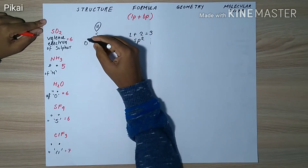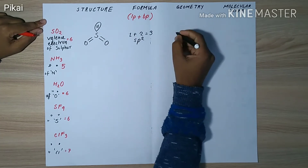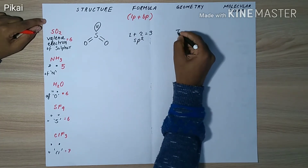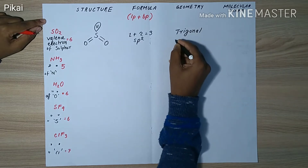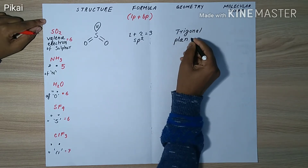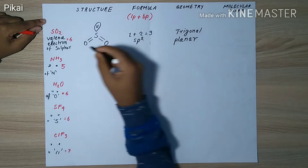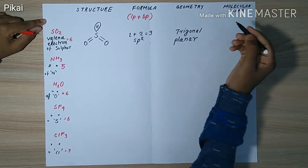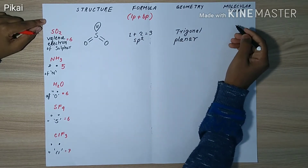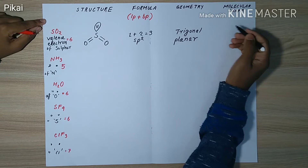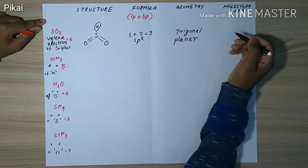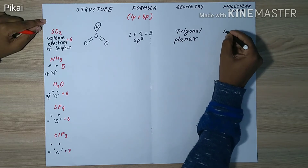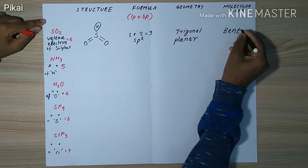From the structure, it has a trigonal structure in a single plane, so the geometry is trigonal planar. When finding the molecular shape, we ignore the lone pairs. If we remove the lone pair, we get a bent-like structure, so the molecular shape of sulfur dioxide is bent.